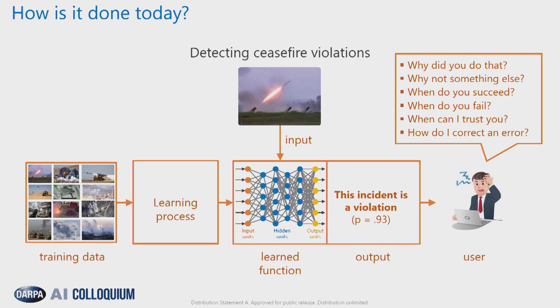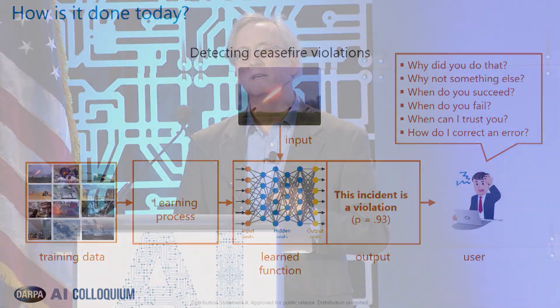The model depicted here as a learned function and also as a deep net — though it could be any type of output — is then capable of being given another example, in this case an image from the same training distribution, to generate a prediction. The problem is that this prediction is not typically accompanied by a justification for that specific prediction, or by anything that provides insight on the model that was learned. This can leave the user very frustrated, particularly if they're responsible for critical applications.